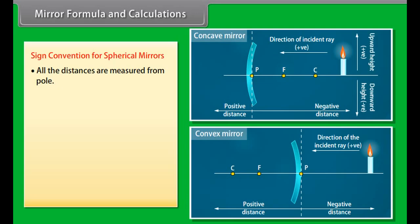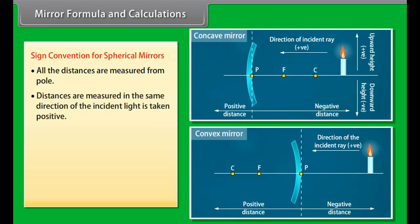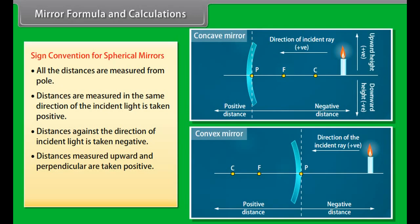Sign convention for spherical mirrors: All distances are measured from the pole. Distances measured in the same direction as incident light are taken as positive. Distances against the direction of incident light are taken as negative. Distances measured upward and perpendicular to the principal axis are positive; distances measured downward and perpendicular are negative.